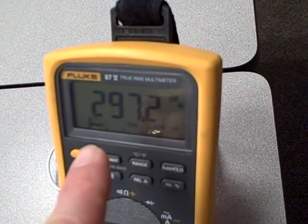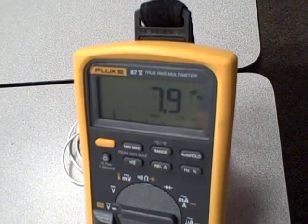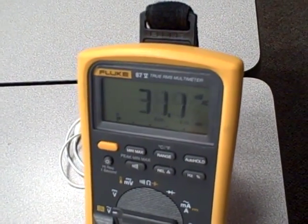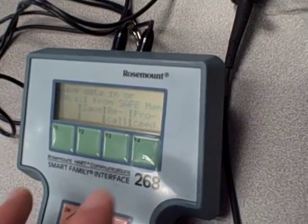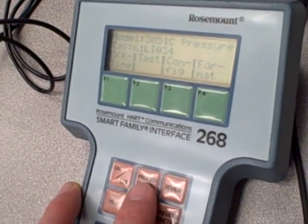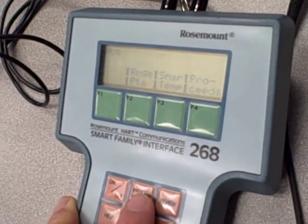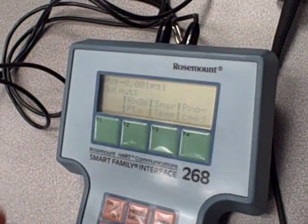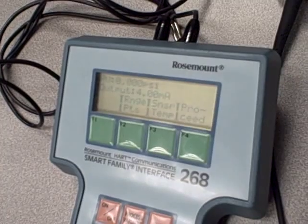There we see a couple blinks. And then occasionally we see bursts of AC millivoltage on the Fluke meter, which also verifies that we have communication. So over here, I'm going to push the proceed button. Now I'm going to push the process variable button. This will place the communicator into a mode where it continually polls the transmitter for process variable information.